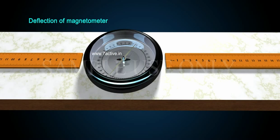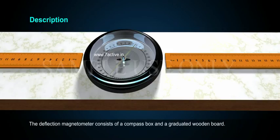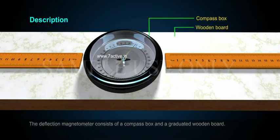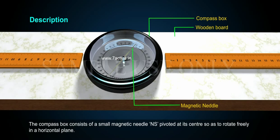Deflection Magnetometer. Description. The deflection magnetometer consists of a compass box and a graduated wooden board. The compass box consists of a small magnetic needle pivoted at its center so as to rotate freely in a horizontal plane.